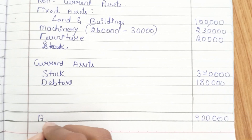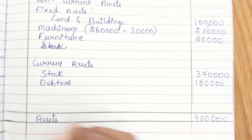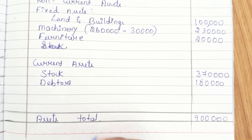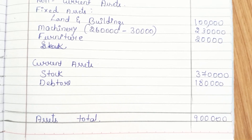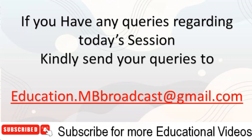This is the total of the assets side — ₹9 lakh. This is how you need to solve the problem. Hope you have understood it very well. Please practice the problem by yourself. If you get any doubt while practicing, please send your queries in the comment box and we'll try to respond as soon as possible. For any queries regarding today's session, kindly send them to education.mbbroadcast@gmail.com.